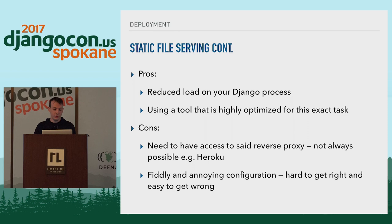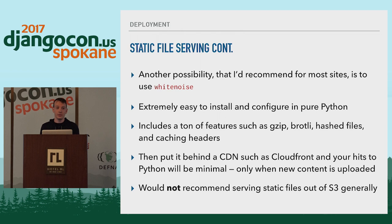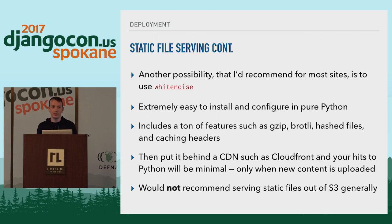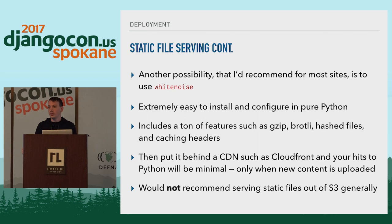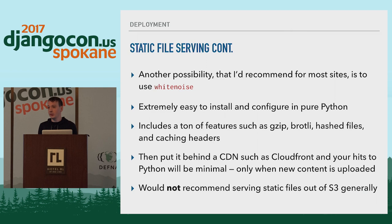Another possibility is WhiteNoise, which is a fantastic package that burst onto the scene a couple years ago. Before that, a lot of people used DJ Static. WhiteNoise ships with all the best practices including gzip, Brotli, hashed files, and caching headers — and it's pure Python. Brotli is a new compression algorithm from Google that beats Huffman encoding for gzip. There's actually an open ticket for Django to somehow integrate WhiteNoise into core, which would be really great, because right now you need to go third party, but WhiteNoise is pure Python and just works.